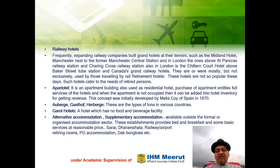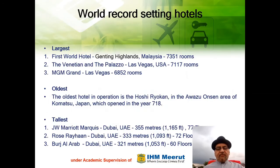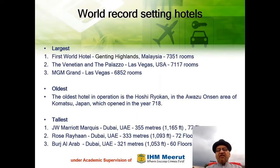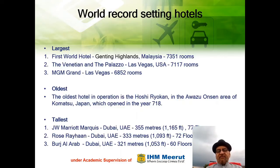World Record-Setting Hotels: the largest hotel is the First World Hotel in Genting Highlands, Malaysia with 7,351 rooms. The Venetian and the Palazzo in Las Vegas, USA have 7,017 rooms, and the MGM Grand in Las Vegas has 6,852 rooms. The oldest hotel in operation is the Hoshi Ryokan in the Awazu Onsen area of Komatsu, Japan, which opened in 718 AD. The tallest hotels are the JW Marriott Marquis Dubai at 355 meters, Rose Rayhaan Dubai at 333 meters, and Burj Al Arab Dubai at 321 meters.